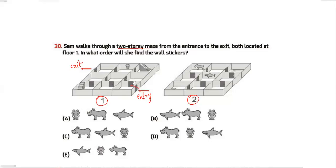You enter from here. There's no other door so you go through this door, then this door, then this door. Even if you go to a dead end you come back, go through this door and this door. Then you reach the stairs going up to the second floor.